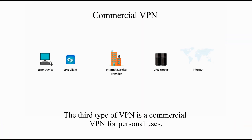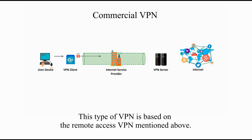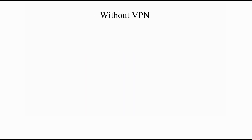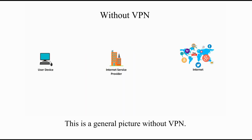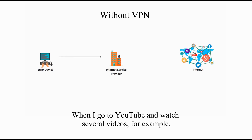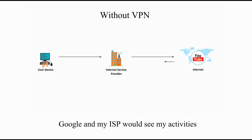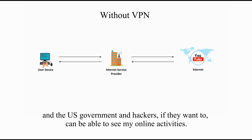The third type of VPN is Commercial VPN for personal use. This type is based on the remote access VPN mentioned above. This is the general picture without VPN: when I go to YouTube and watch videos, for example, Google and my ISP would see my activities, and the U.S. government and hackers, if they wanted to, can also see my online activities.